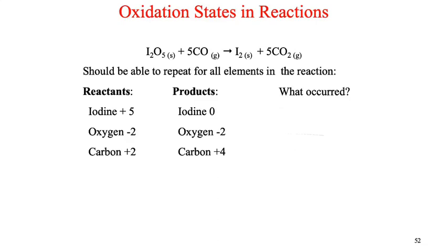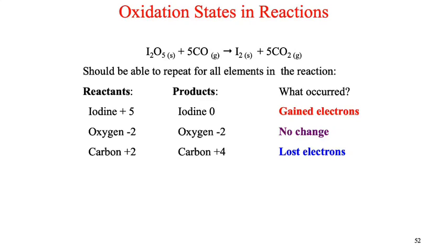Now that we've got oxidation states — because I've given you these answers — what happened to the iodine? It went from a plus five oxidation state to a zero. To go from plus five to zero, it had to gain electrons. What happened to the oxygen? We went from minus two to minus two — nothing. What happened to the carbon? We went from plus two to plus four — it lost electrons, and that's why it's becoming more positive.